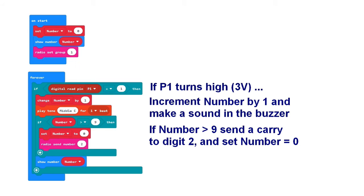Normally, P1 is low, corresponding to 0 volts. The program reacts when P1 becomes high, when it is connected to 3 volts through the buzz wire.